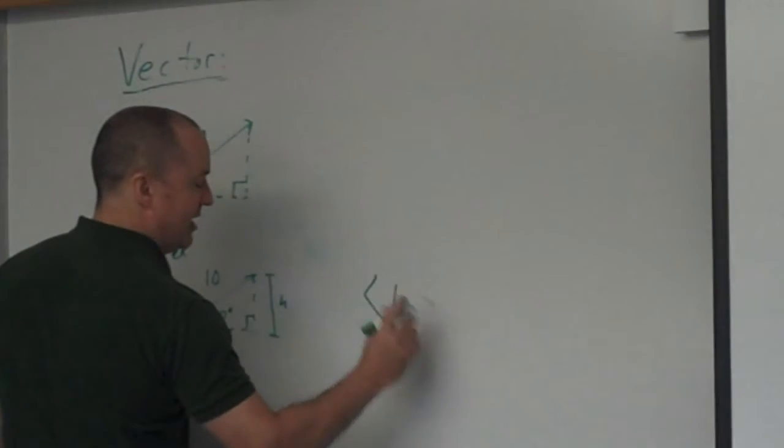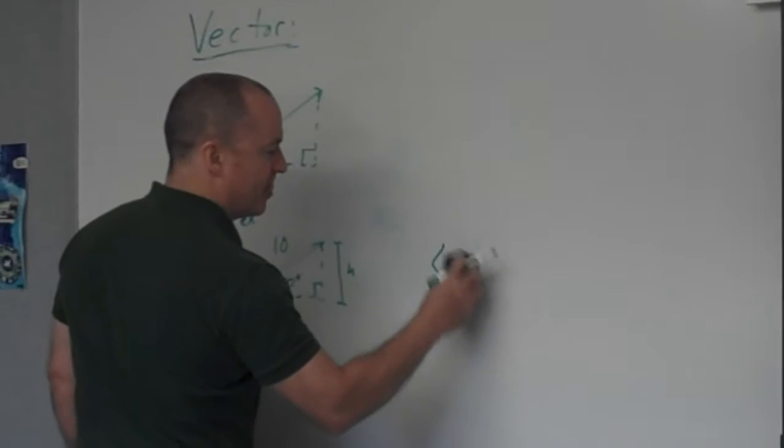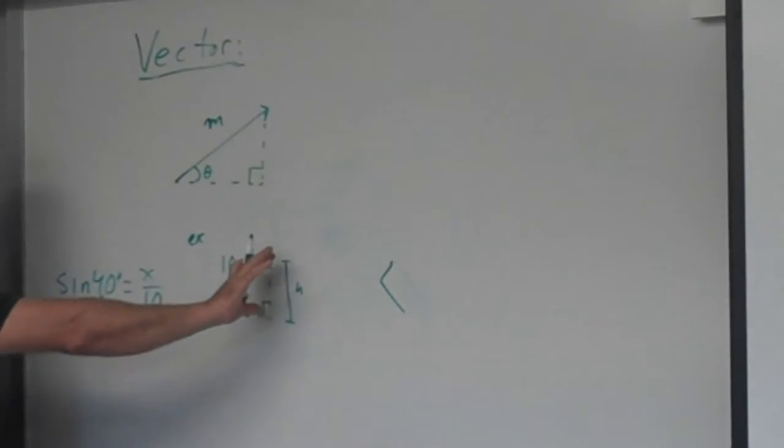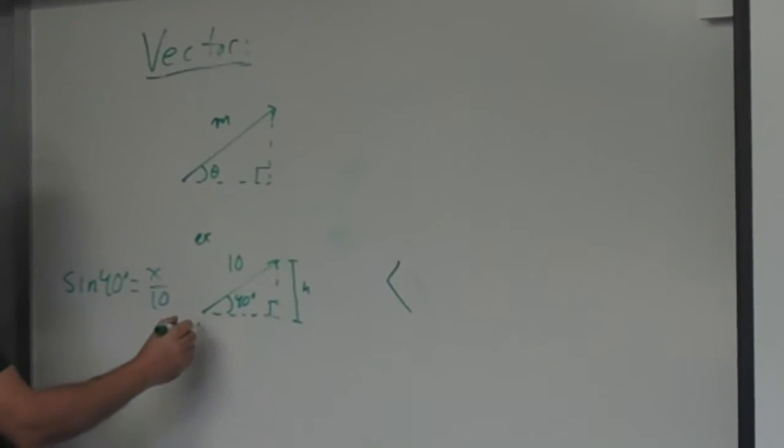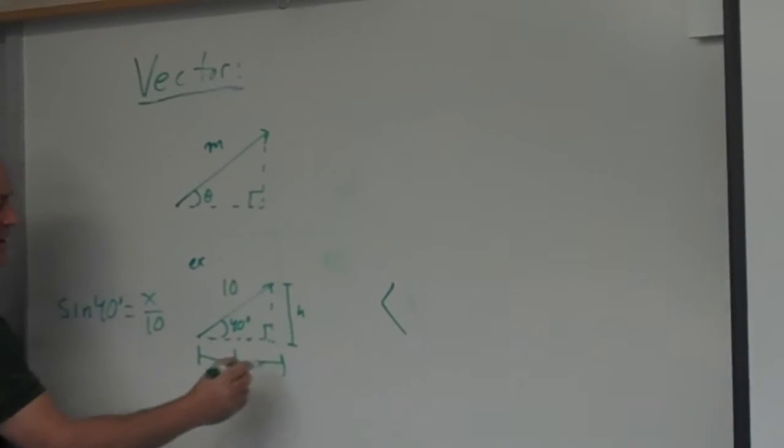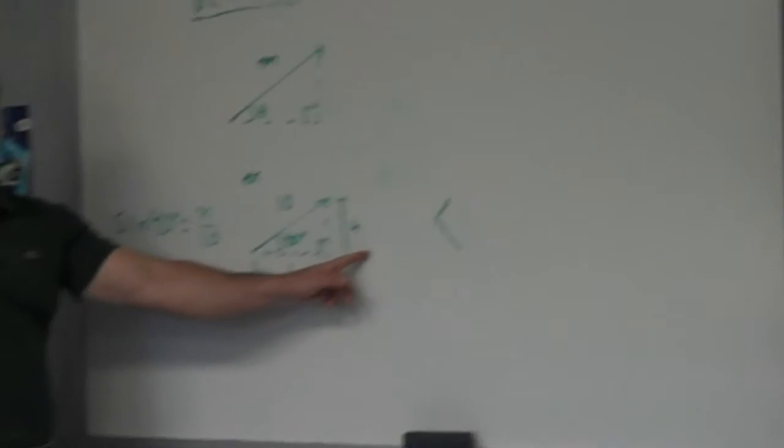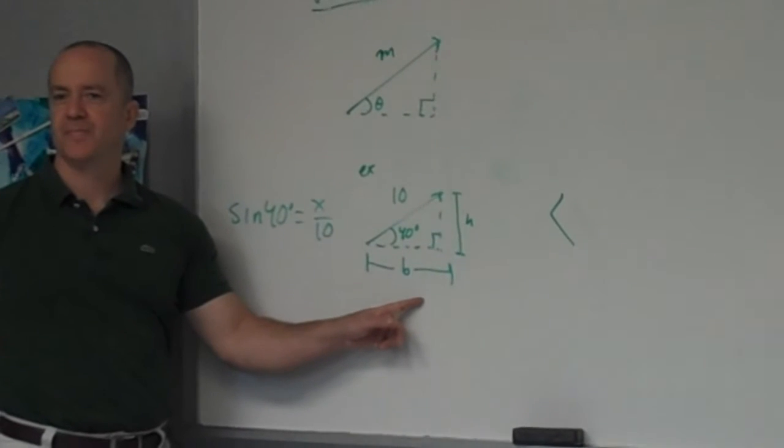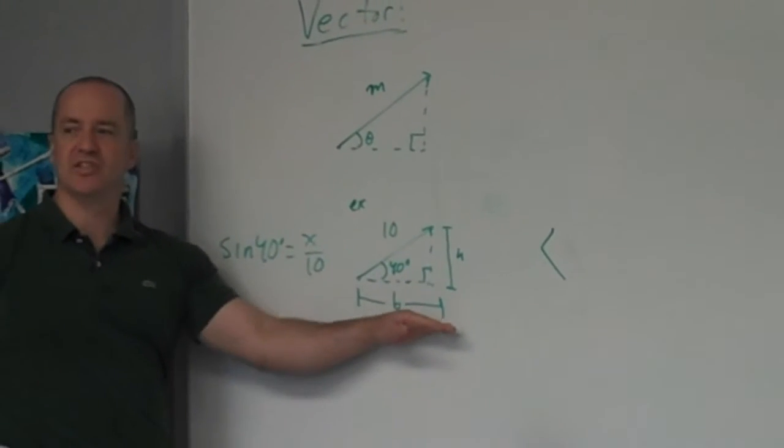Okay, so if X over 10 equals sine 40, when you rearrange it, this height is always going to be... Whoops, does the height come first? Which comes first, the side or the height? The side. The side. The bottom. And what do you think the bottom is going to be?